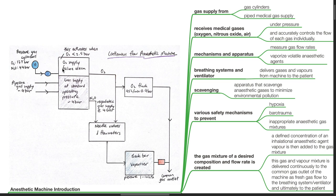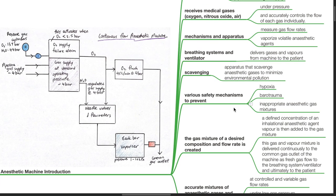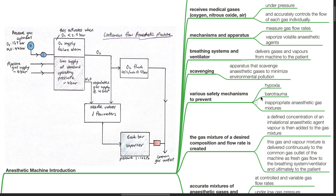Gas supply is received from gas cylinders and piped medical supply. The anaesthetic machine receives medical gases under pressure and accurately controls the flow of each gas individually. Mechanisms and apparatus are present to measure gas flow rates and vaporize volatile anaesthetic agents. Breathing systems and ventilator are present to deliver gases and vapors from the machine to the patient. Scavenging apparatus scavenges anaesthetic gases to minimize environmental pollution. Various safety mechanisms are present to prevent hypoxia, barotrauma and inappropriate delivery of anaesthetic gas mixtures.